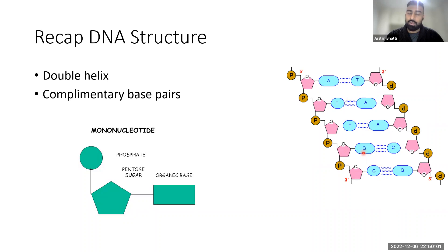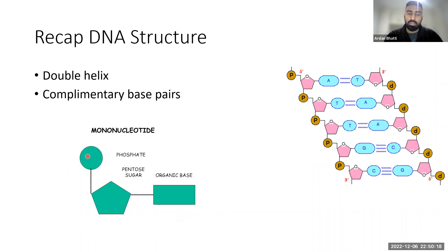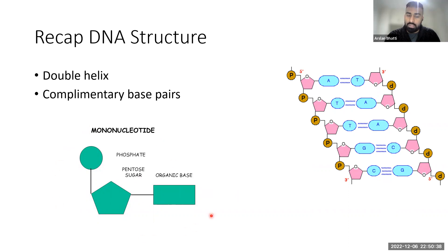Go back to the last lesson and have a look at those words - make sure you memorize them. This structure here is our mononucleotide, and you need to know the structure. There's a phosphate group - so this is like one piece of DNA. The mononucleotide has a phosphate group bound to a pentose sugar, which is the five-carbon sugar, and then that is bound to an organic nitrogenous base.